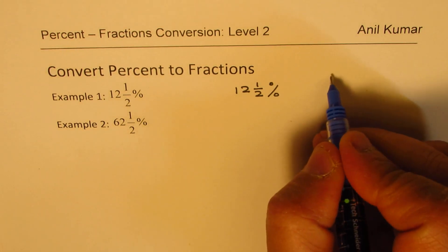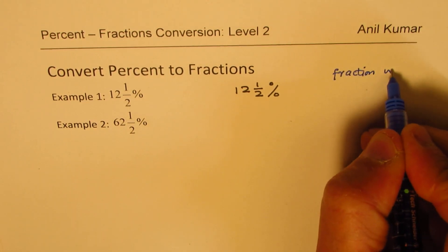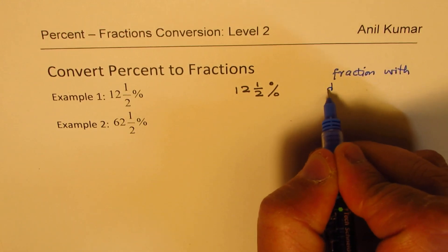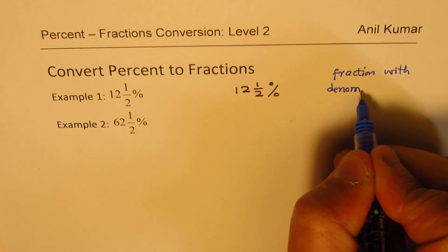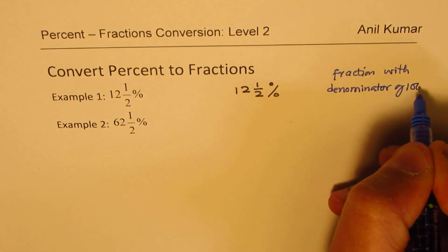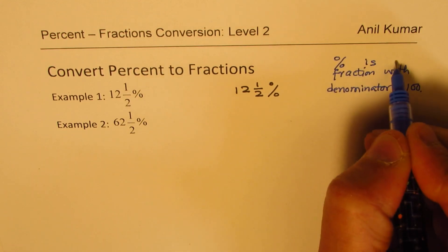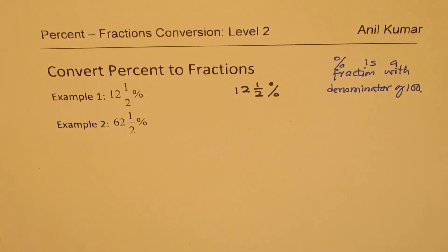Percent is something over 100. So it is with denominator of 100. So you write this as a fraction with denominator of 100. That is the meaning of percent. So percent is a fraction with denominator of 100.